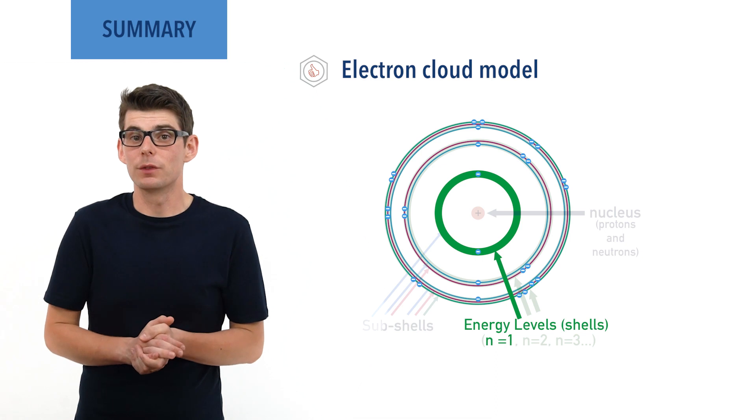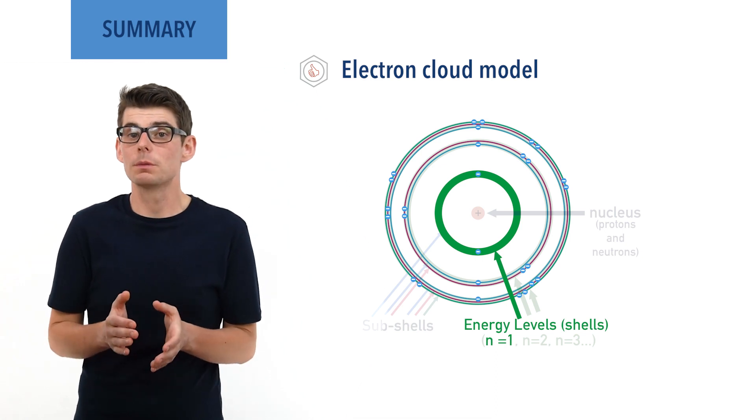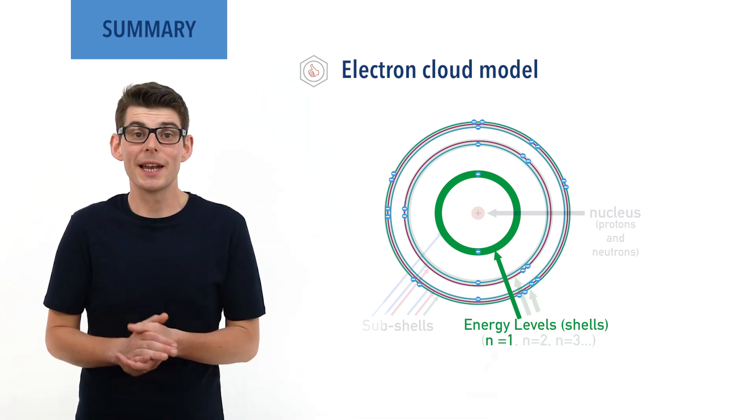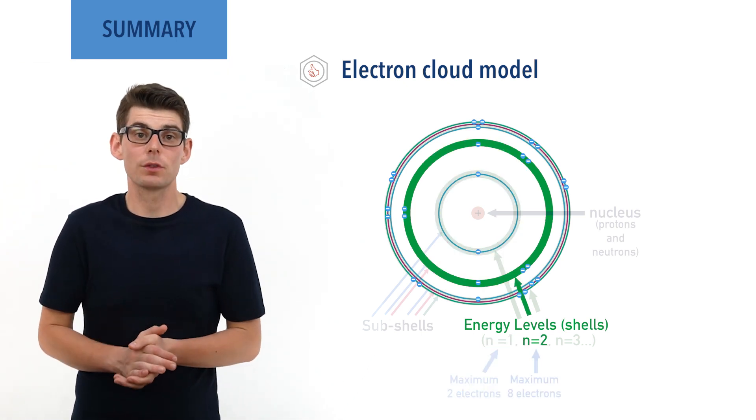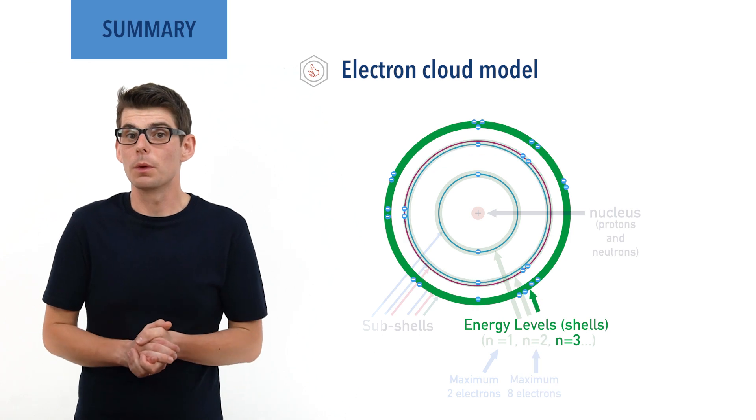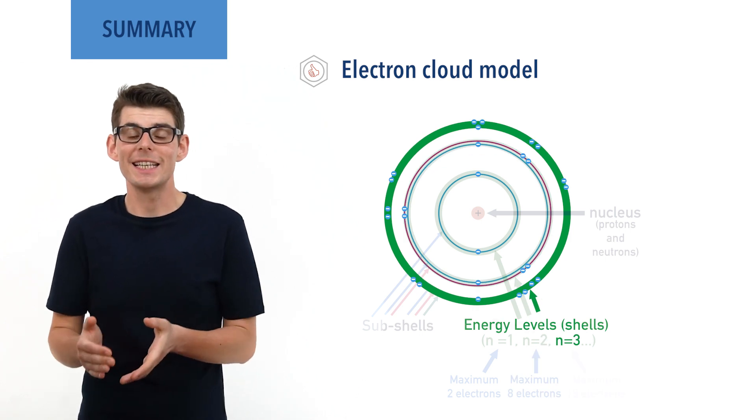The first energy level, or shell, with a principal quantum number of 1, can hold 2 electrons. The second, with a principal quantum number of 2, can hold 8 electrons. The third, with a principal quantum number of 3, can hold 18 electrons.